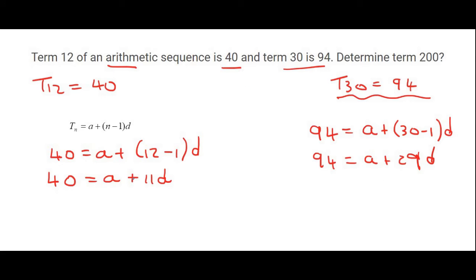And then you can use simultaneous equations, and you can do that however you want. There are many different ways to do it. What I'm going to do is take this equation here and get a alone. So that's going to be a is equal to 40 minus 11d.